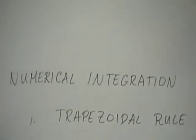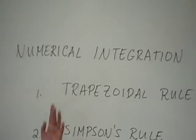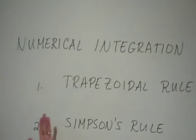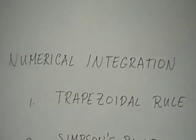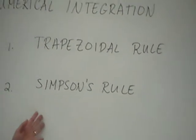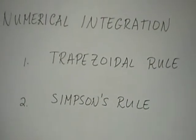Our next topic is numerical integration — numerical, meaning we look at a lot of numbers, which I actually don't like. But anyway, we have to explain these two types of numerical integration: the trapezoidal rule and Simpson's rule. I'll walk you through how each one works. If we have time, maybe we can talk about approximation for the error; if not, we can do it next time.